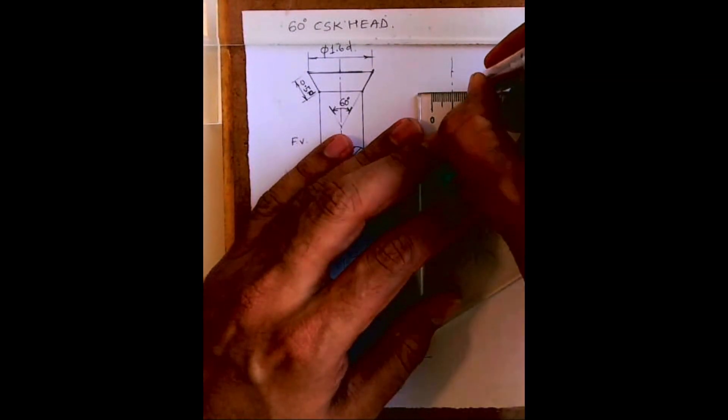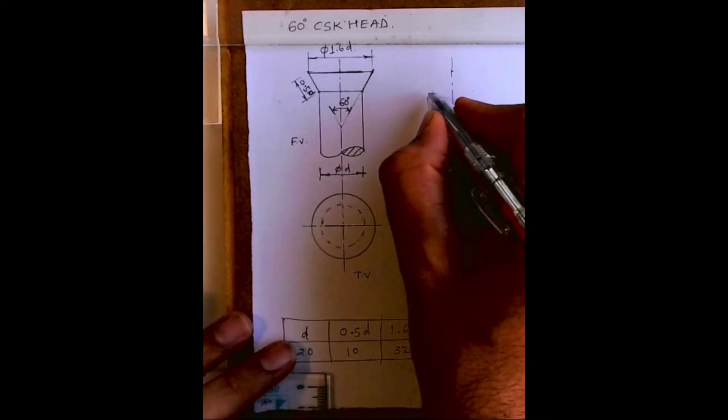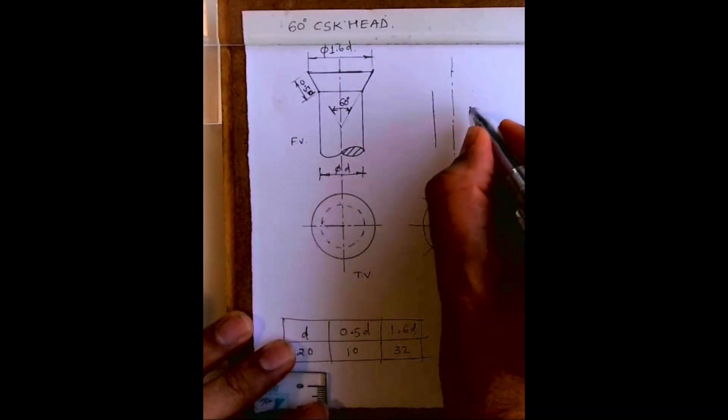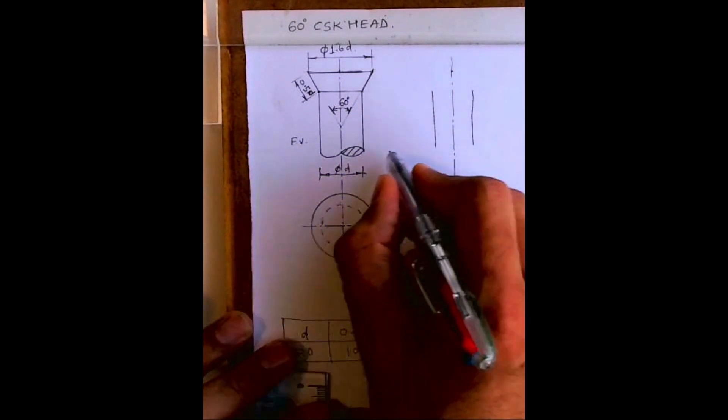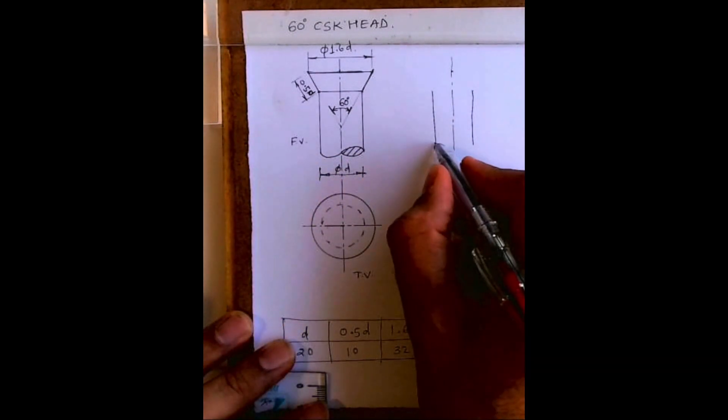This is 20, so you take 10, 10 on both sides and draw vertical lines. And this will be a curve.